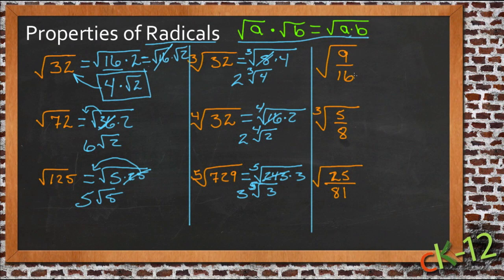You can take two numbers that are divided by each other under the same root and split them up. So the square root of 9 16ths is the square root of 9 over the square root of 16. So that gives us 3 over 4.